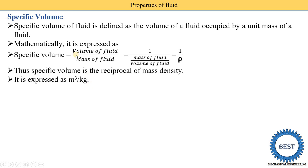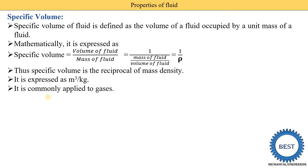So specific volume is equal to 1 upon mass density — it is the reciprocal of mass density. It is expressed in units of meter cube per kg. Specific volume is commonly applied to gases, not liquids; this term is mainly connected with various types of gases.